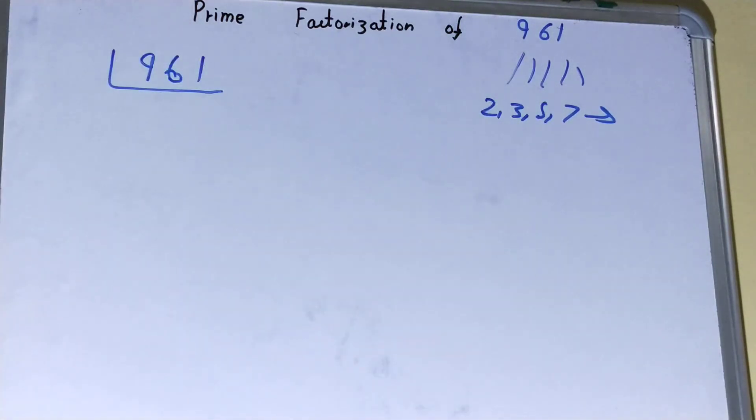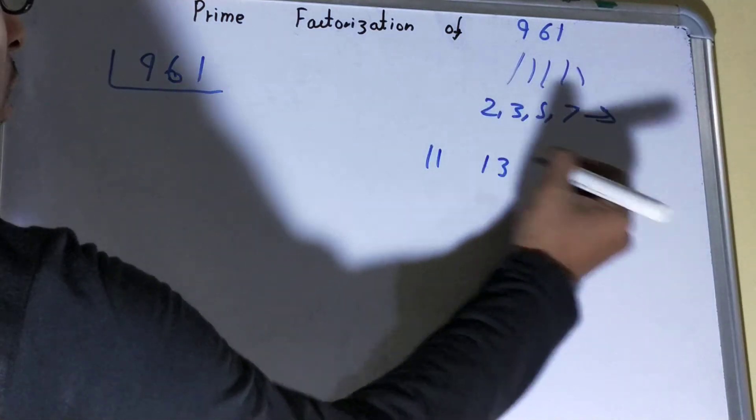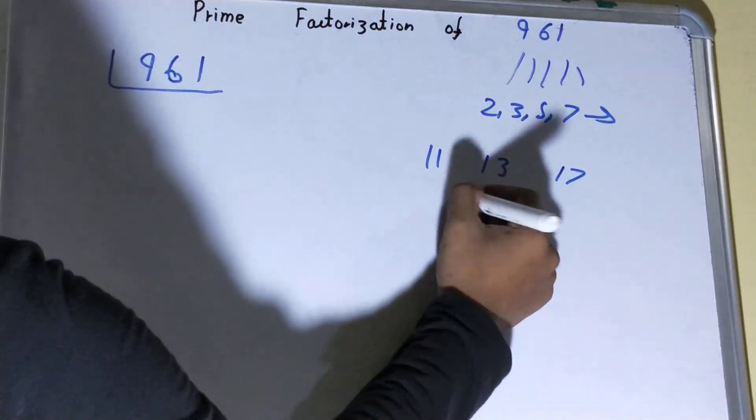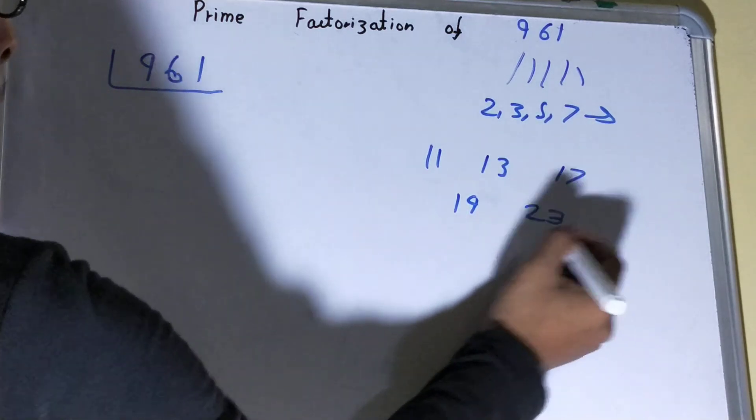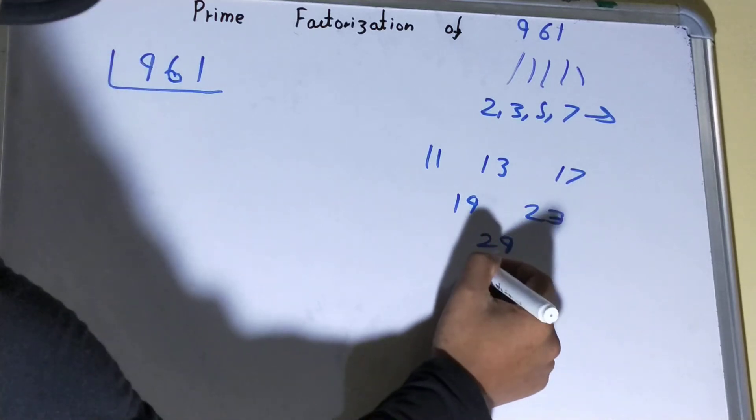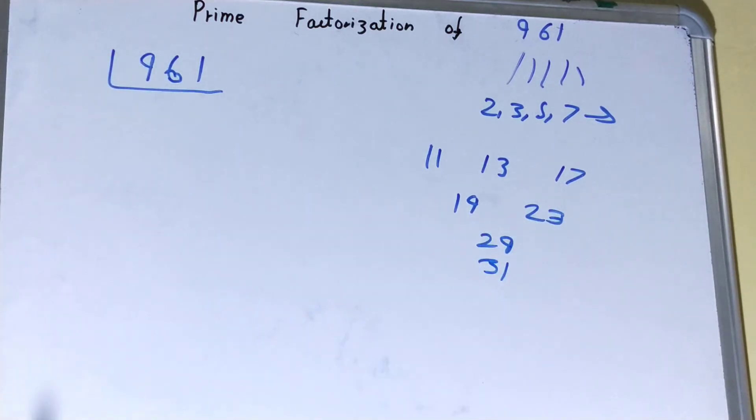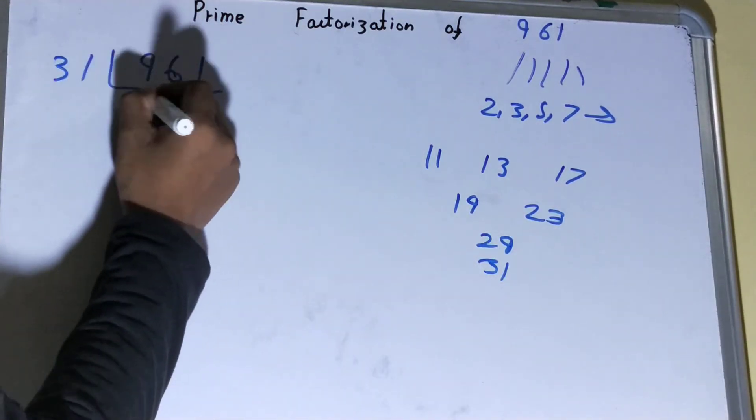will not. With 7, also it will not. With 11, also not. 13, also. 17, also not. 19, also not. 23, also not. 29, also not. But if we try it with 31, with 31 it will. Okay, 31 into